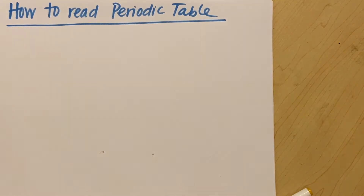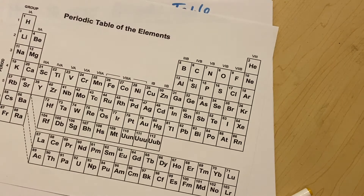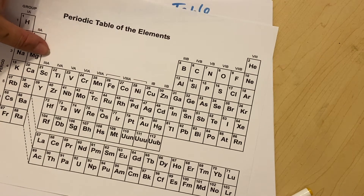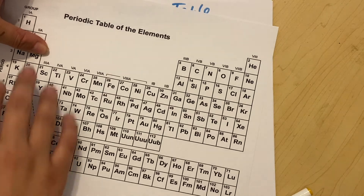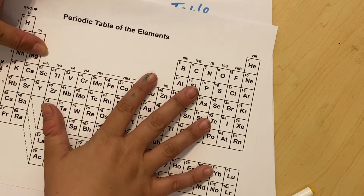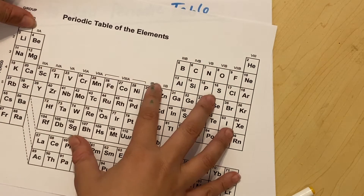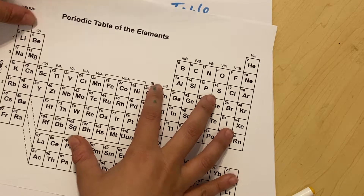Way long ago, we did not used to have this beautiful periodic table in chemistry. We had known elements, and we didn't know what to do with them. We didn't know how to organize them. The periodic table is just a way of organizing your elements.